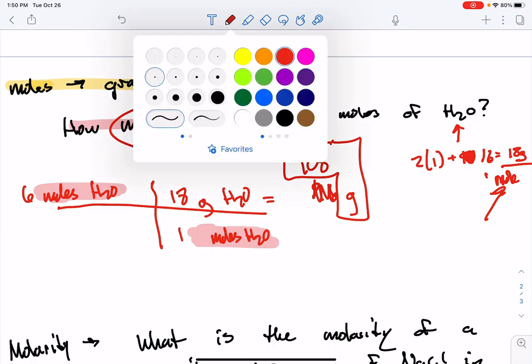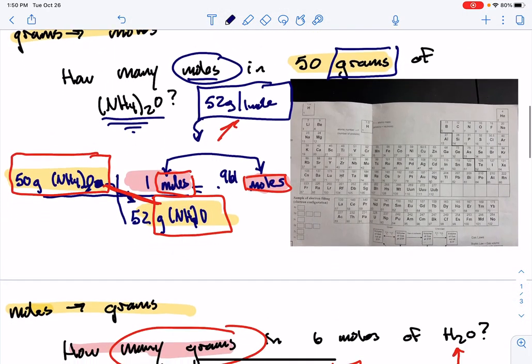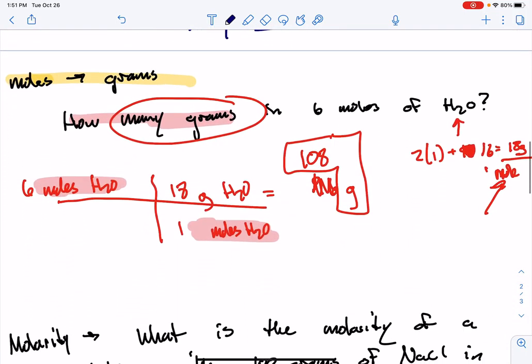Okay, coming back up here, just a quick review. When we are asked for moles, the answer is usually small. So you see, it was 0.961 moles. When we're asked for grams, it's usually a big number.